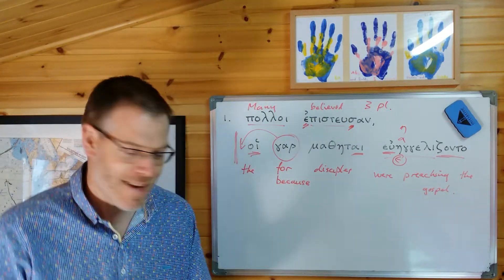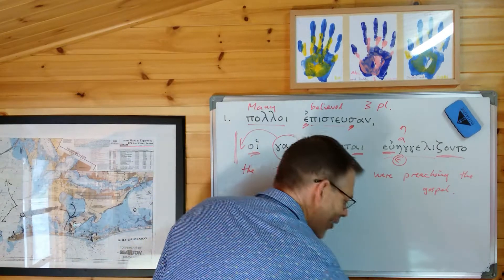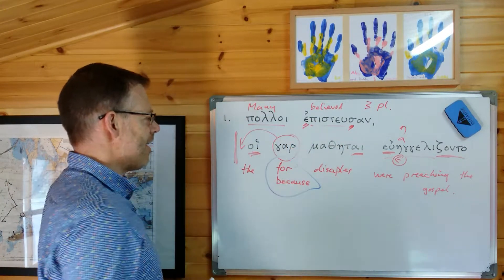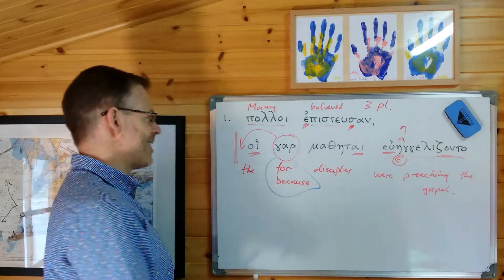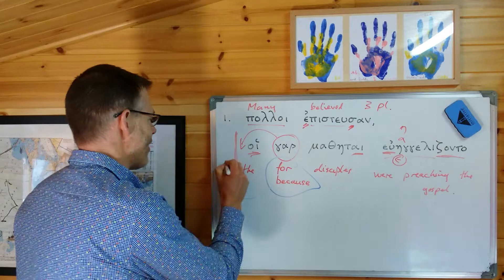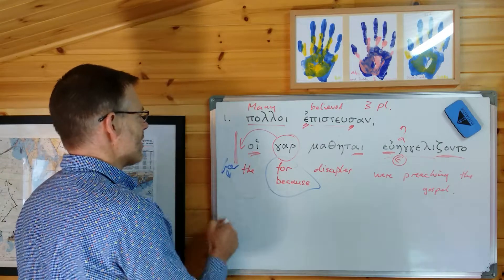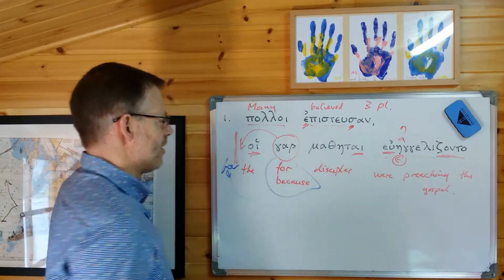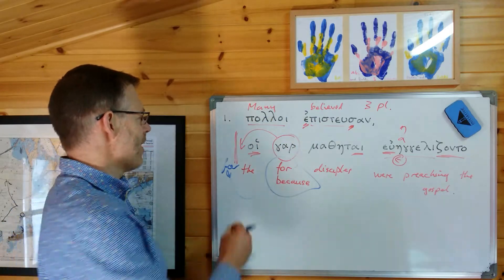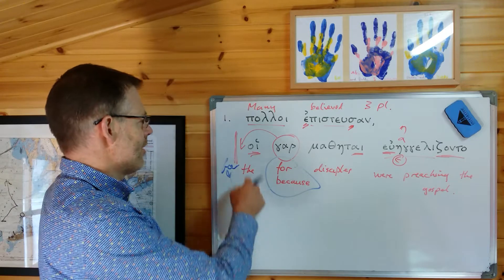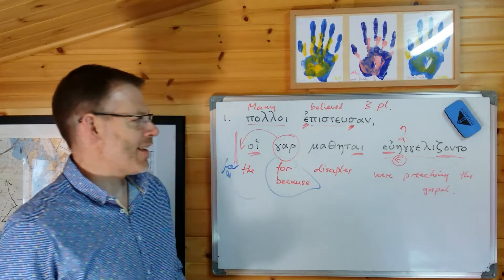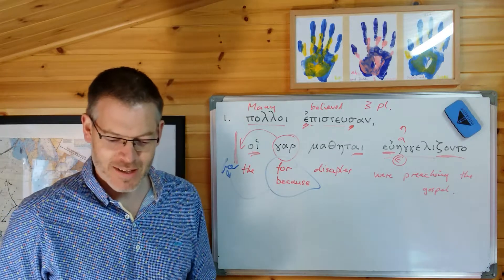Now here's the point of this whole exercise. This conjunction - the post-positive gar - is written in Greek second in the clause, but in English we're going to move it back to the front. So: 'for' or 'because the disciples were preaching the gospel.' The whole sentence reads: 'Many believed, for the disciples were preaching the gospel.' There's your first example.